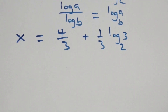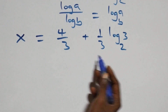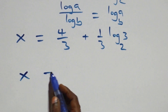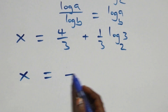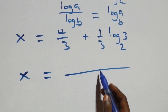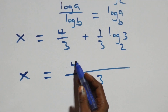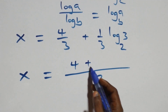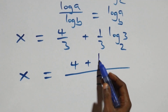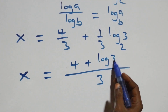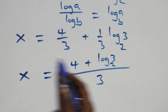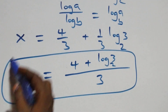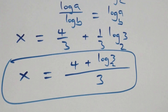We can bring this together as one fraction with denominator 3: x = (4 + log₂3) over 3. That is the value of x. Now let's check whether this satisfies the original problem.